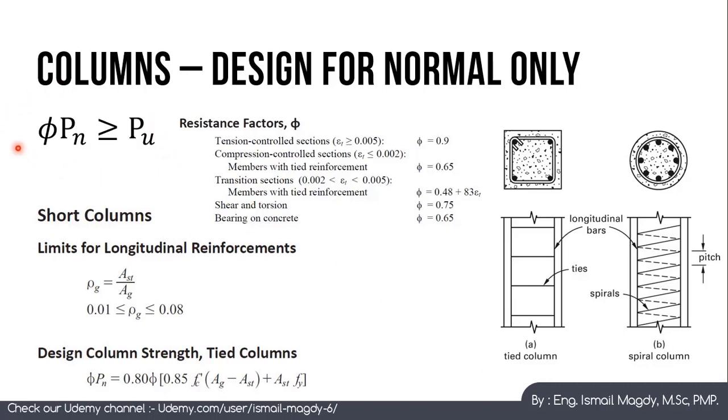Same like we have said in beams, this is the governing formula for the design of RC Columns under Normal Forces, which is Phi Pn has to be bigger than or equals to P ultimate, where P ultimate is the factored normal force, while Pn is the nominal strength of the column itself under Normal Forces, and Phi is the reduction factor or the resistance factor in case of compression control sections, which equals 0.65.